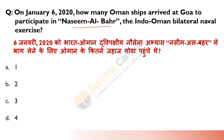Naseem Al-Bahr — which is a bilateral naval exercise on January 6, 2020 — how many ships arrived? Answer is B — two ships. Naseem Al-Bahr started in 1993 and is a naval exercise between India and Oman.